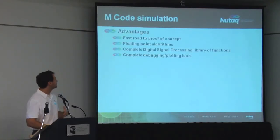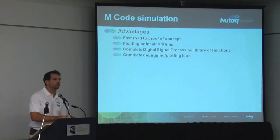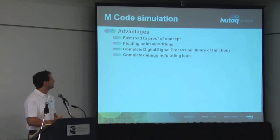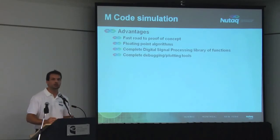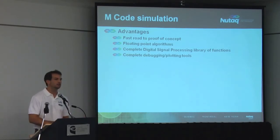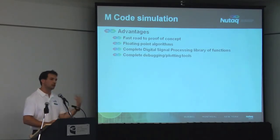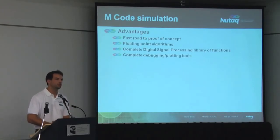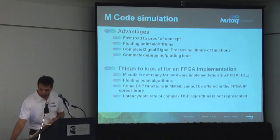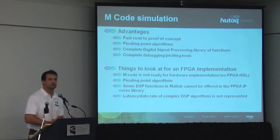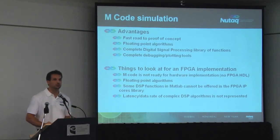To implement that, you usually use M code in MATLAB because it's a really fast road to proof of concept. You've got floating point algorithms, a complete digital signal processing library with all functionalities like additive Gaussian noise, digital filtering, FFT, and it's really easy to debug with graphs, plots, and step-by-step instructions in your code.